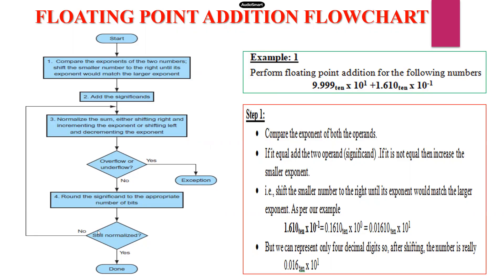Then we check whether the result is normalized or not. Normalization means the number starts with a single non-zero digit. If not normalized, either shift right and increment the exponent, or shift left and decrement the exponent. Then check for overflow or underflow — if overflow occurs, an exception error will occur. If no overflow or underflow, round the significant digits to the appropriate number of bits, then check if still normalized. If normalized, stop the process; otherwise repeat normalization.